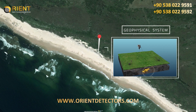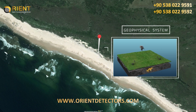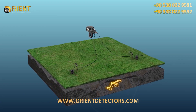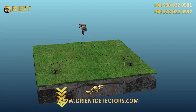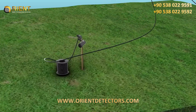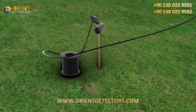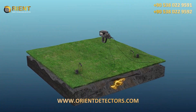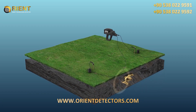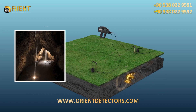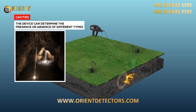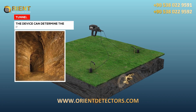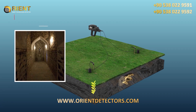Geophysical System. The high-performance geophysical system uses geo-electrical measurement to measure how much the soil resists or conducts electric current, or ground resistivity. Wedges are planted in the ground in the search area and, based on the soil's resistivity values, the device can detect the presence or absence of caves, cavities, tunnels, or hidden rooms.